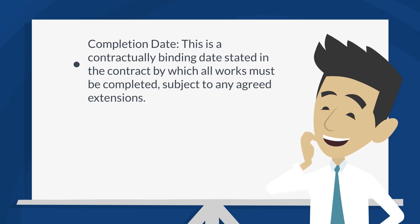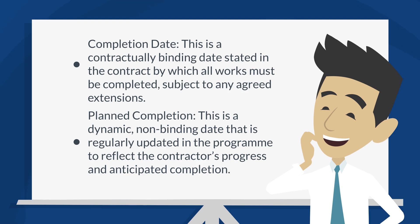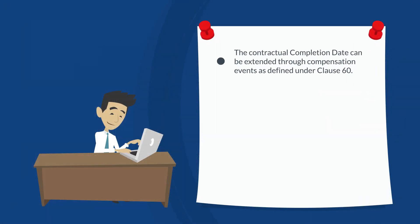Key differences: The completion date is a contractually binding date stated in the contract by which all works must be completed, subject to any agreed extensions. Planned completion is a dynamic, non-binding date that is regularly updated in the program to reflect the contractor's progress and anticipated completion.